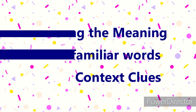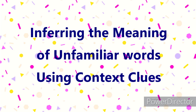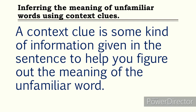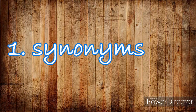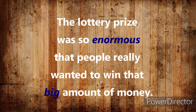Since our topic is inferring the meaning of unfamiliar words using context clues, let us also break down the ways on how to do it. A context clue is some kind of information given in the sentence to help you figure out the meaning of an unfamiliar word. One way is to look for synonyms of the words in the sentences. For example: 'The lottery prize was so enormous that people really wanted to win that big amount of money.' The unfamiliar word here is enormous, and by looking for its synonym, you find that the word big is similar to enormous.